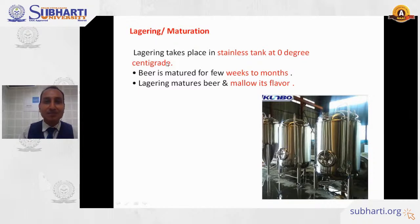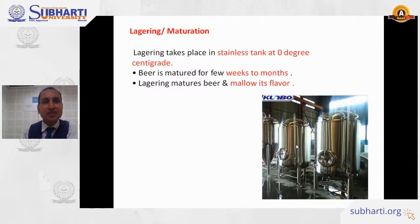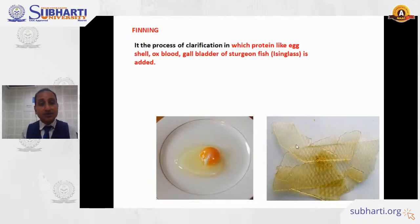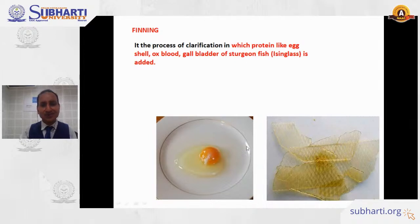After fermentation, maturation takes place. This lagering step is done in stainless steel vats at zero degrees Celsius. Beer can be matured for weeks to months — some breweries bottle fresh, while others mature for months to allow flavors to mellow. For fining, the beer is clarified using proteins such as egg white, eggshells, ox blood, gallbladder, sturgeon fish, or isinglass. A moderate heat causes the protein to coagulate, bringing impurities to the floor.